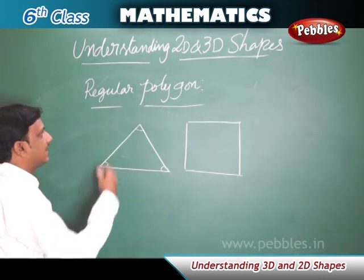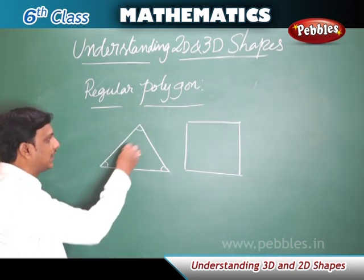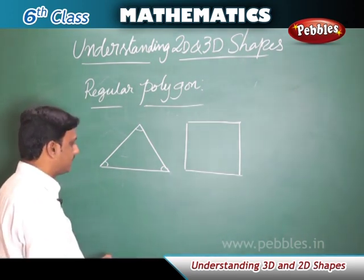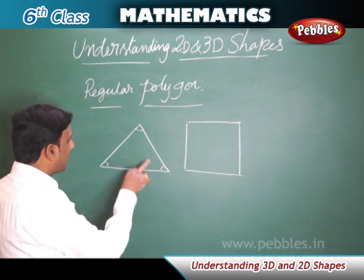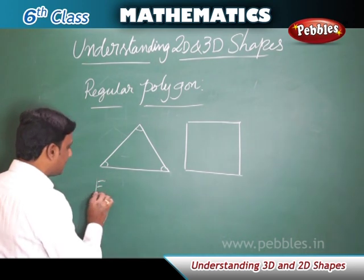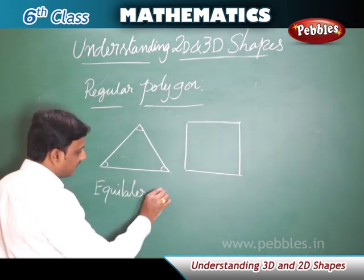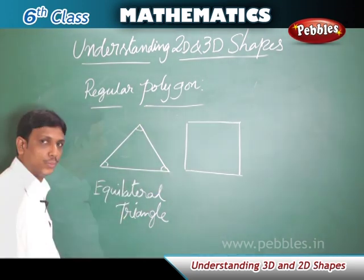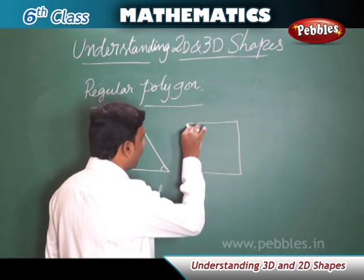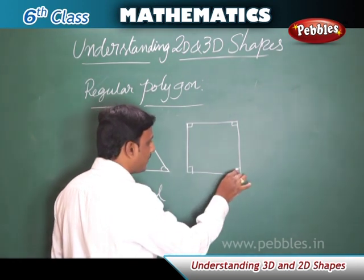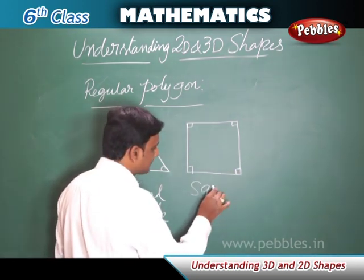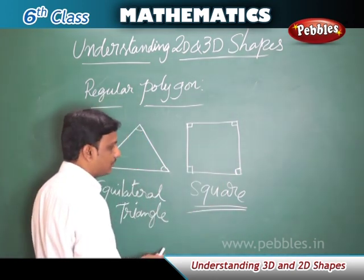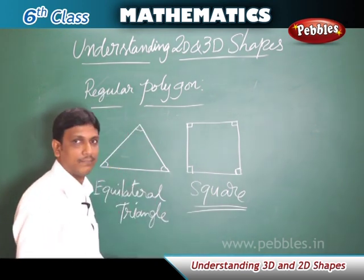Now let us understand what a regular polygon is. A polygon in which all angles and all sides are of the same value is called a regular polygon. For example, a triangle where all angles are equal is a regular triangle. Similarly, a quadrilateral where all sides and all angles are equal is called a square. A square is an example of a regular polygon.